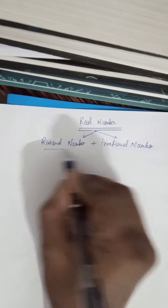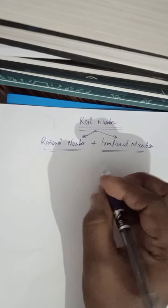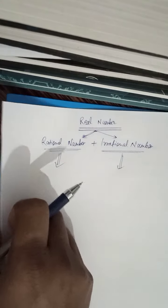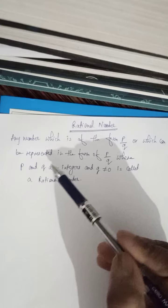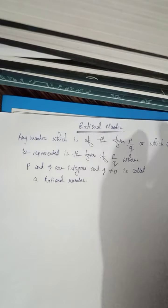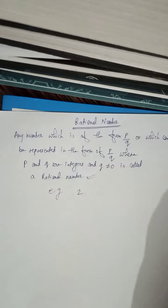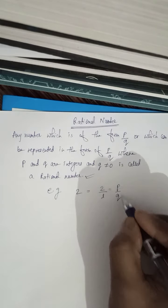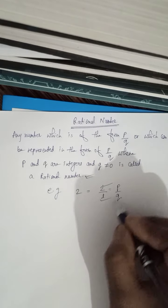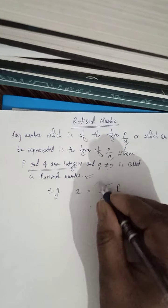So what is a real number — rational number or irrational number? Any number which can be represented in the form of p/q, where p and q are integers and q is not equal to 0, is called a rational number. For example, 2 can be represented as 2/1, which is in the form of p/q where p is 2 and q is 1 — both integers, and q is not equal to 0.